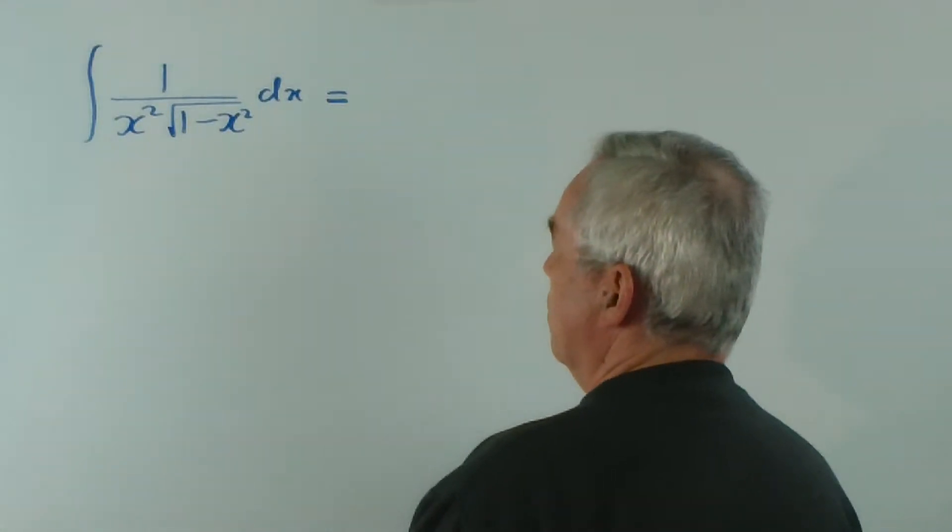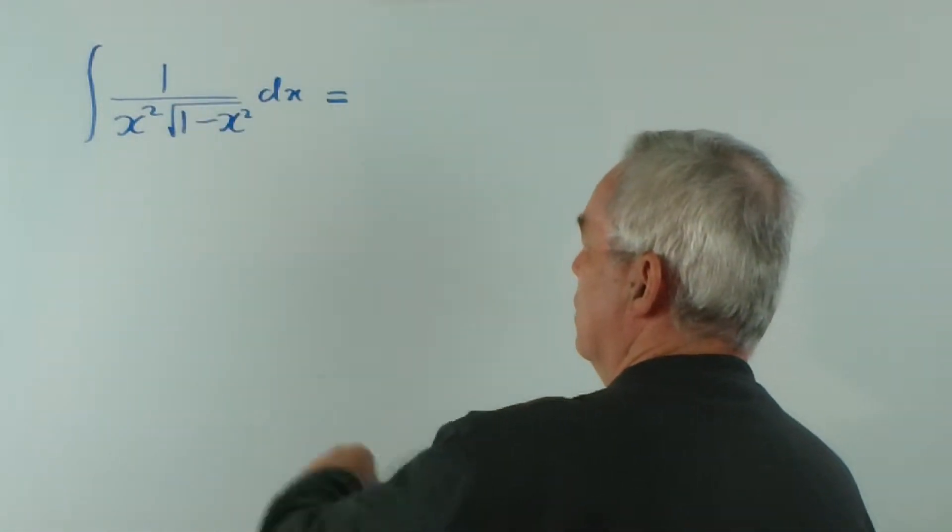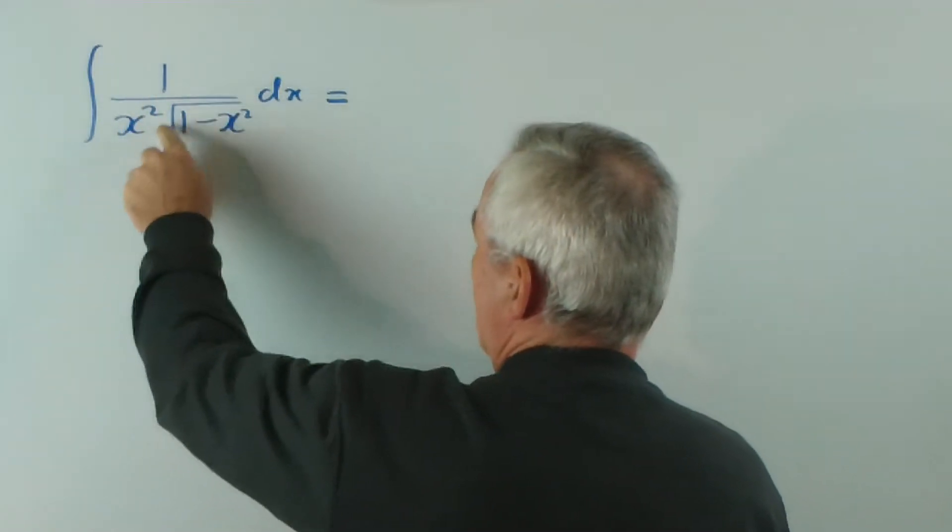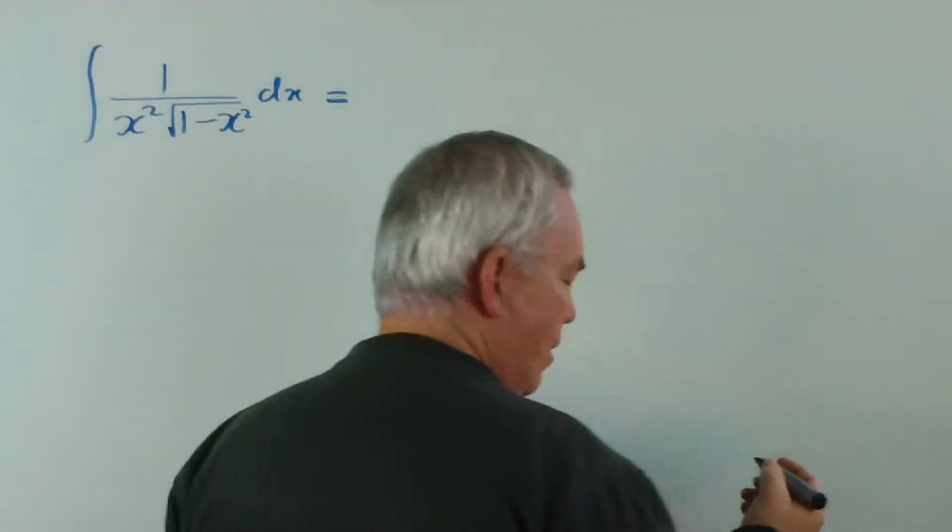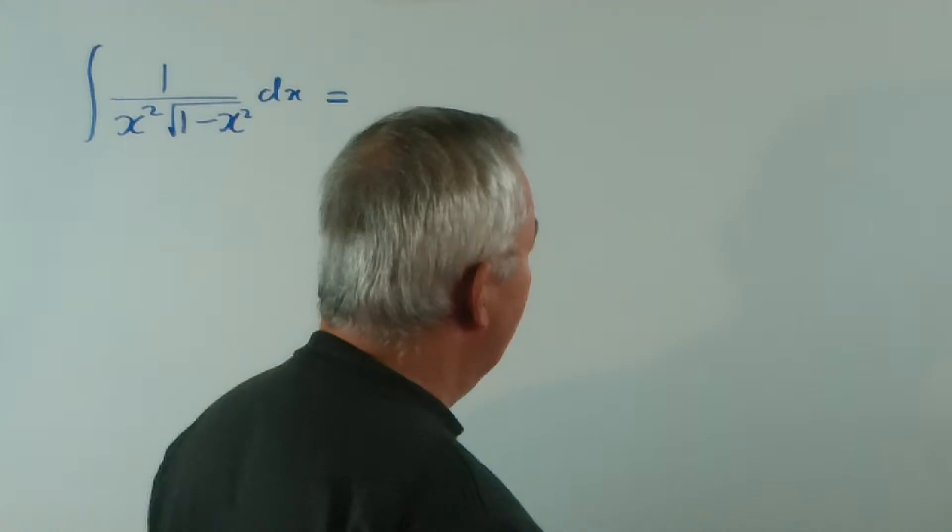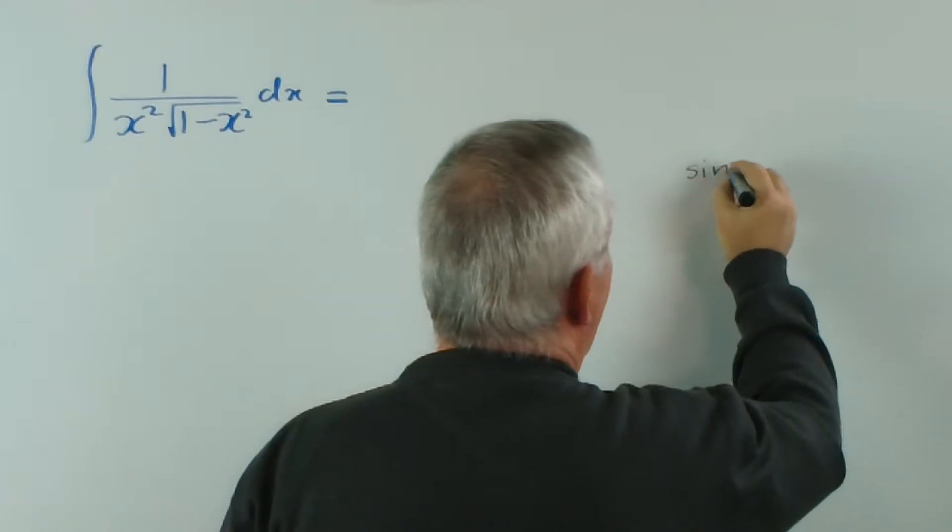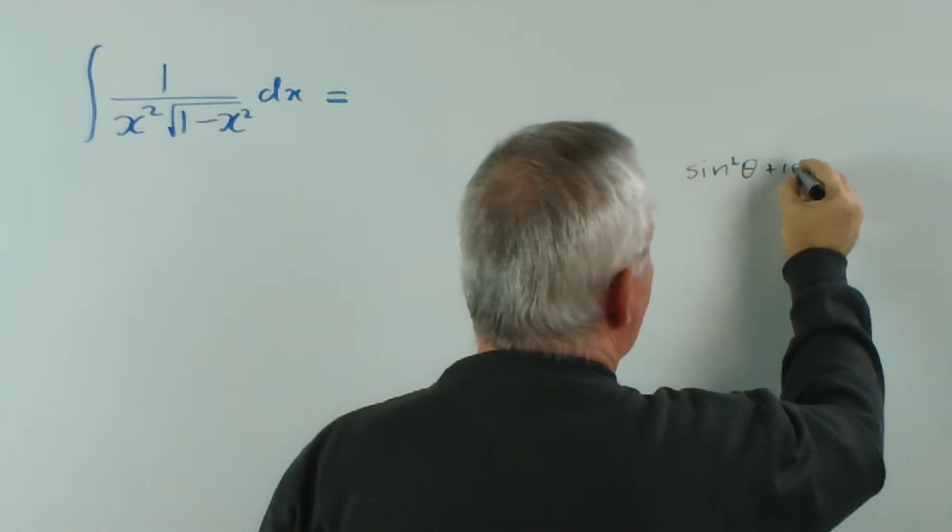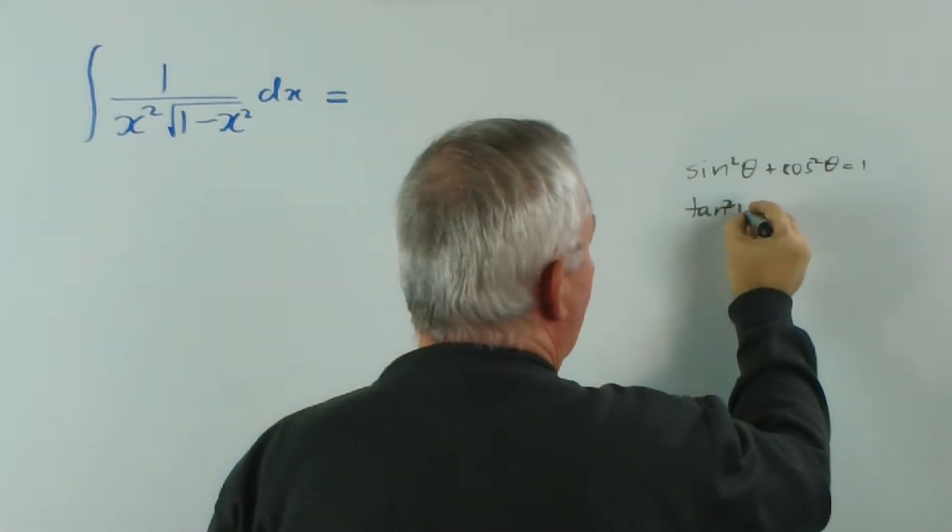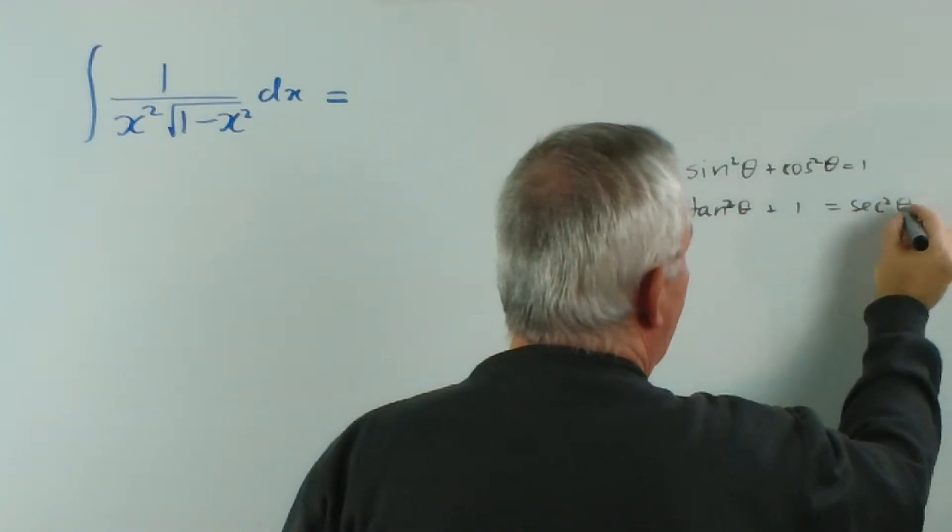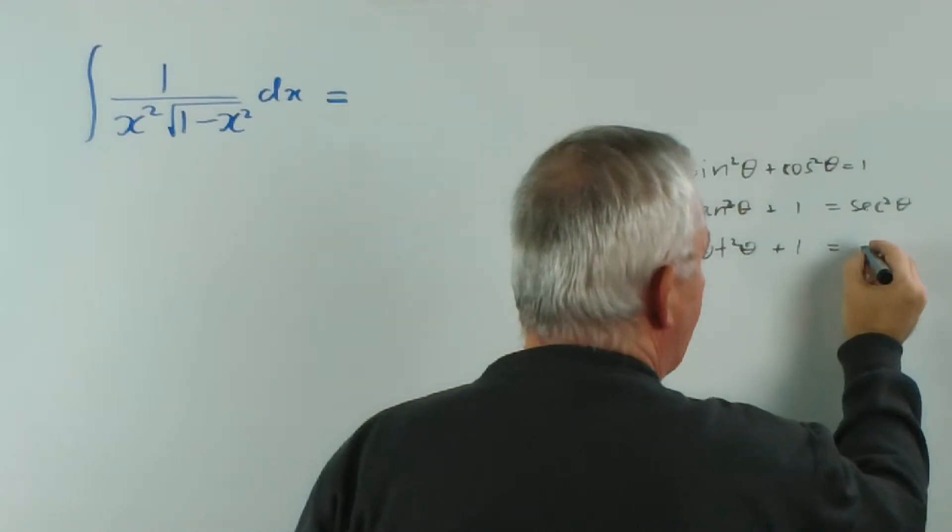Now what substitution would be best? Well, we go to the worst part of the expression, and that's the part under the radical, and we would try to resolve this. A lot of the substitutions we use with great profit are trigonometric substitutions. Now, I want you to observe something. We know that sin²θ + cos²θ = 1. We know that tan²θ + 1 = sec²θ. And we know that cot²θ + 1 = cosec²θ.